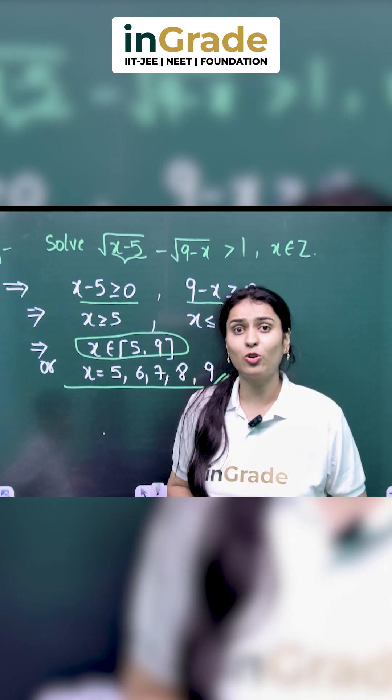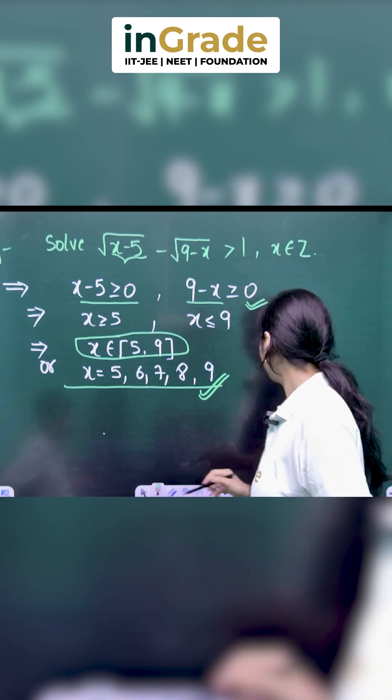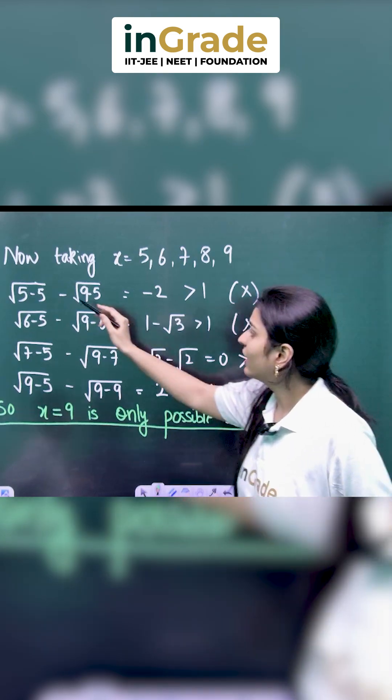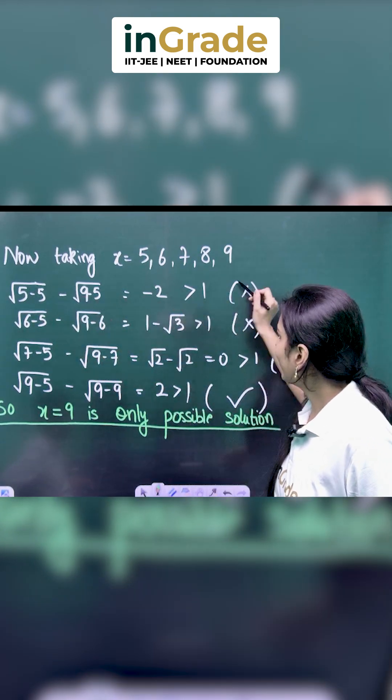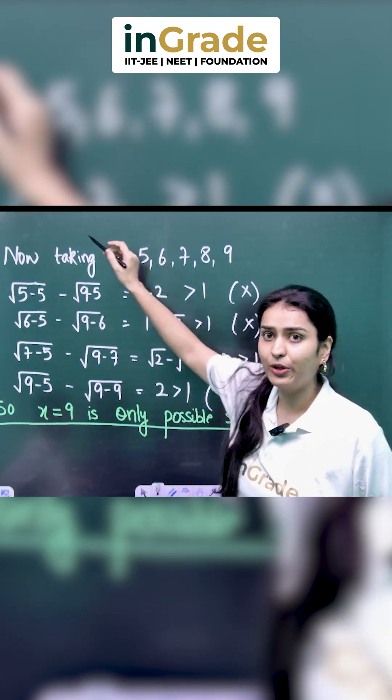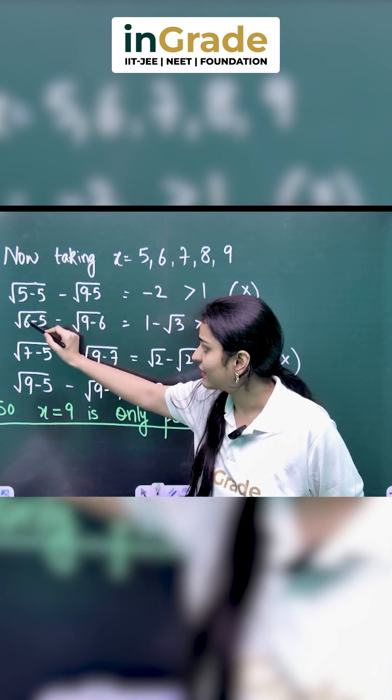But here, it is not our final solution. We have to put all these values in the inequality to see what can be our possible solutions. After putting all these values 5, 6, 7, 8 and 9,